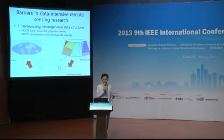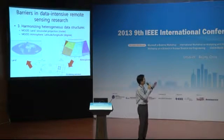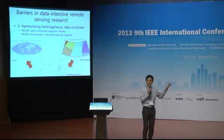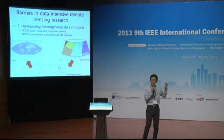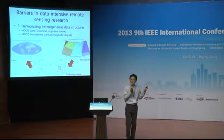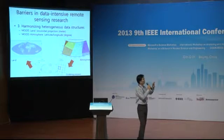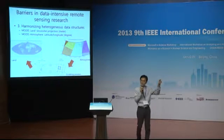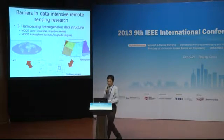The third barrier was harmonizing heterogeneous data structures in MODIS. The MODIS land product is standardized with sinusoidal projection and predetermined pixel locations, so it is easy to use. But the MODIS atmospheric product is a swath in latitude and longitude. To co-locate these two products, a reprojection process of the Level 2 MODIS atmospheric product is needed, which takes lots of time.